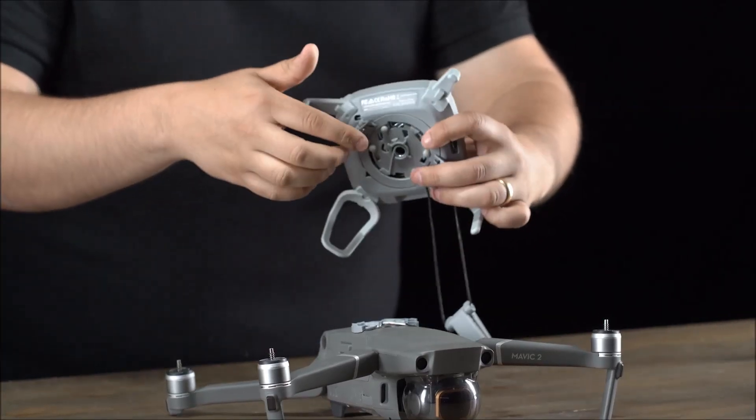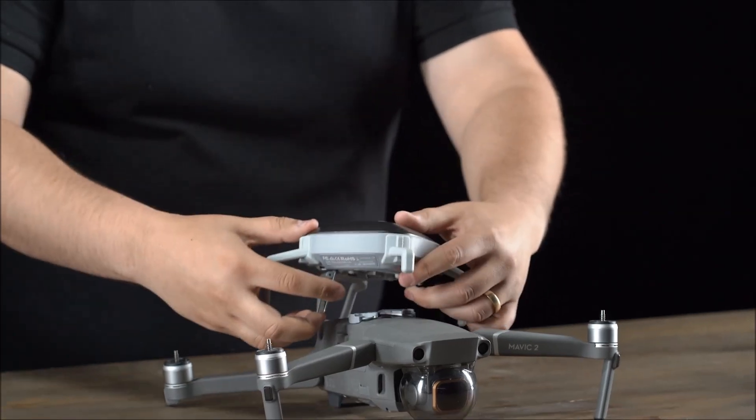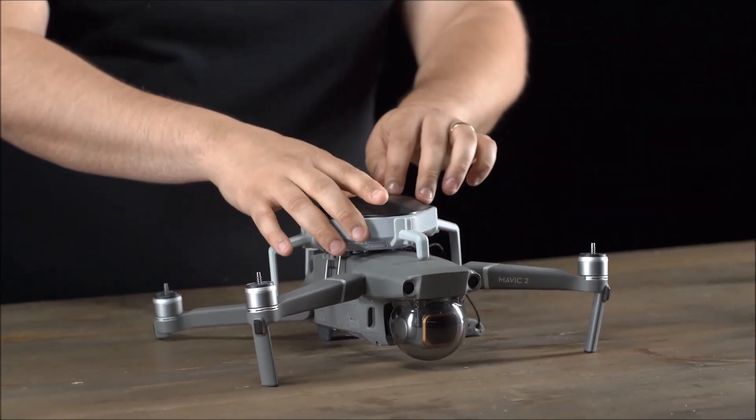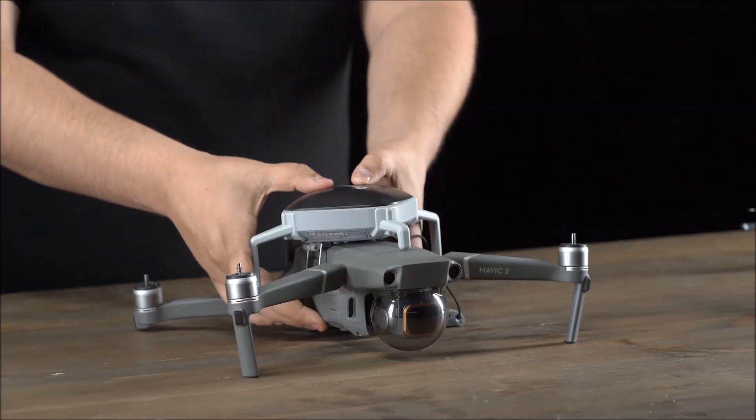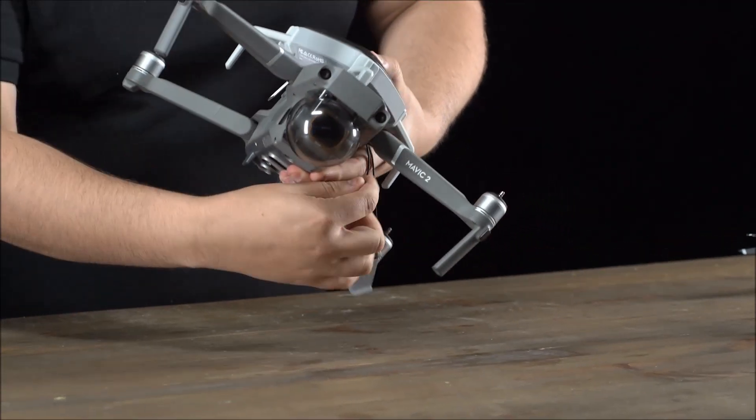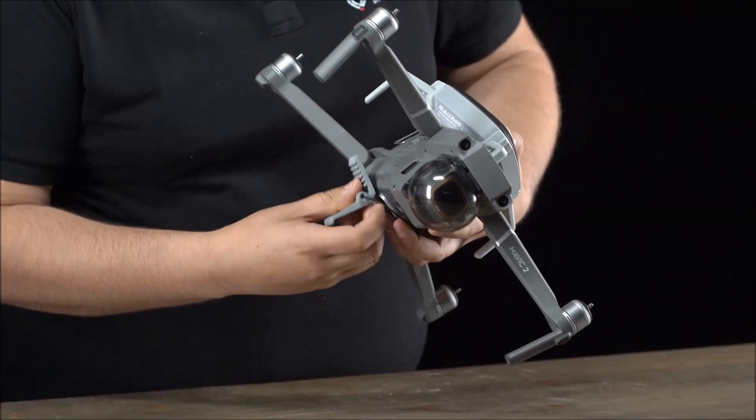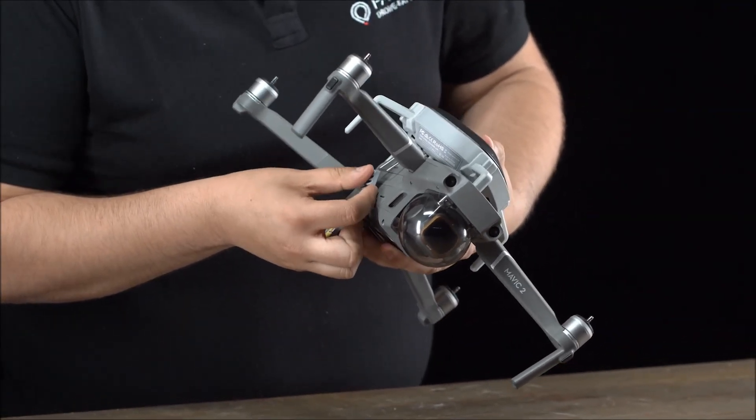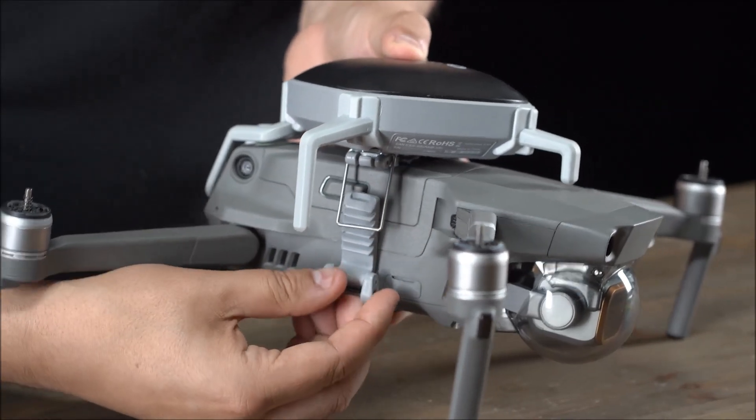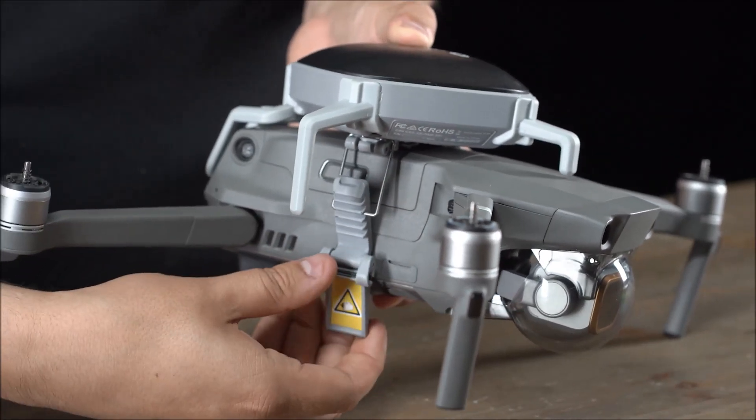Now, make sure that the hook is fully extended. Sit it on top of the placement stamp. Now, with the clasp open, bring the string underneath the drone, like so.